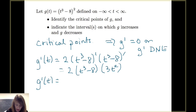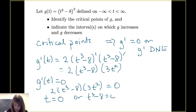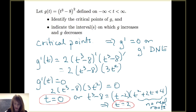So we set g prime of t equal to 0. Since a product equals 0 only when one factor is 0, we get t equals 0 or t cubed minus 8 equals 0. Factoring t cubed minus 8 as (t minus 2)(t squared plus 2t plus 4), we get t equals 2 as a root. The quadratic factor gives no real roots. So the only critical points are t equals 0 and t equals 2.